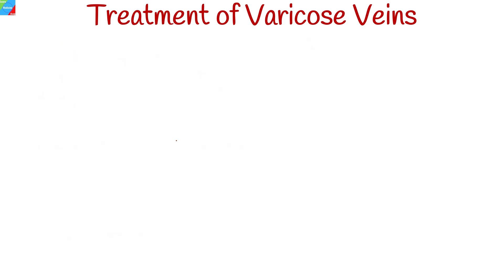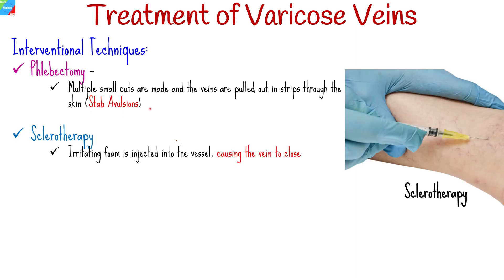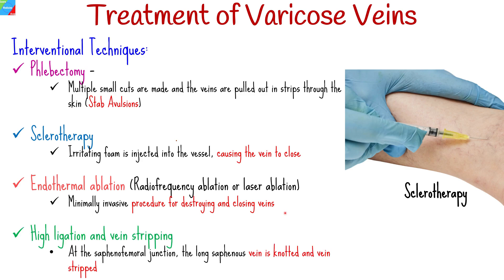Interventional techniques include phlebectomy, where multiple small cuts are made and the veins are pulled out through the skin in a procedure known as stab avulsions. Sclerotherapy involves injecting irritating foam into the vessel, causing the vein to close. Endothermal ablation uses radiofrequency or laser ablation as a minimally invasive procedure for destroying and closing veins. High ligation and vein stripping involves knotting and stripping the long saphenous vein at the saphenofemoral junction.